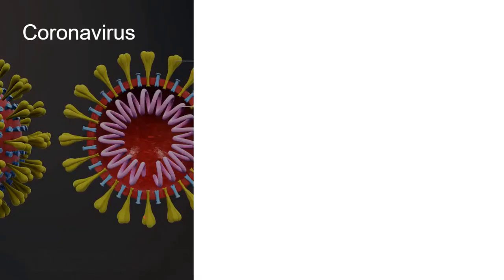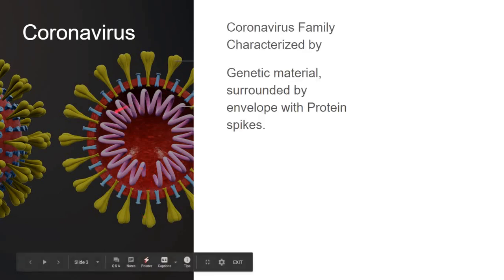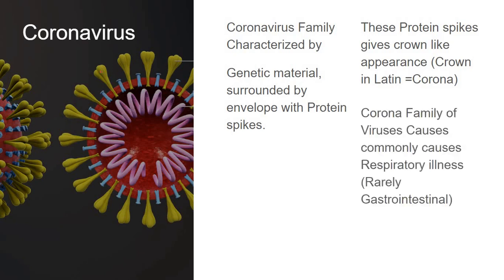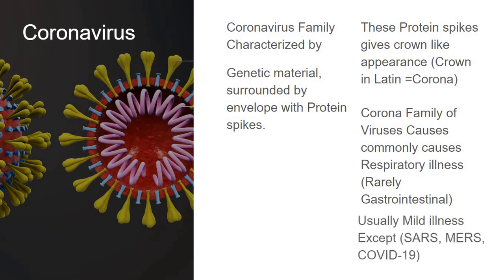Let us see about the coronavirus family. In the coronavirus family, the genetic material is in the center, surrounded by an envelope containing protein spikes. These spikes look like a crown — in Latin, 'corona' — that is how the name coronavirus is derived. The corona family of viruses causes mostly respiratory illness and rarely gastrointestinal illness. Most infections will be mild and not serious, except for SARS, MERS, and the recent pandemic COVID-19.